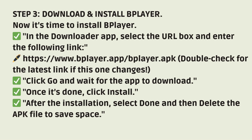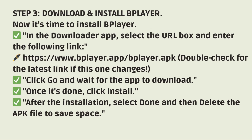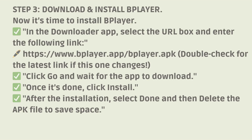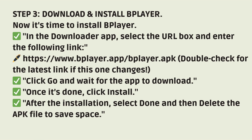Step 3: Download and install Bplayer. Now it's time to install Bplayer. In the Downloader App, select the URL box and enter the following link: https://www.bplayer.app/bplayer.apk. Double-check for the latest link if this one changes. Click Go and wait for the app to download. Once it's done, click Install.